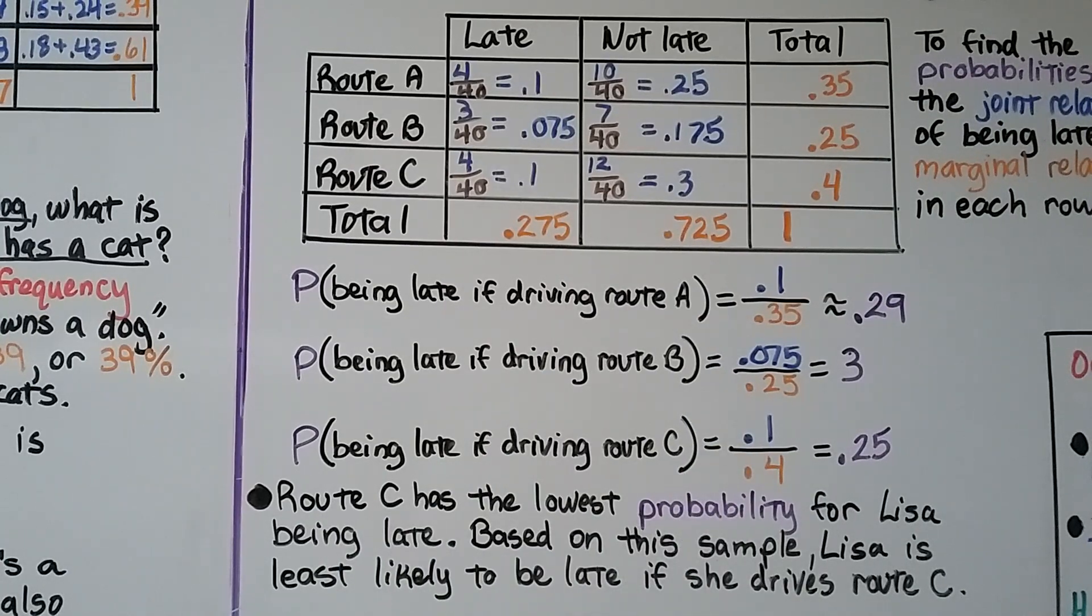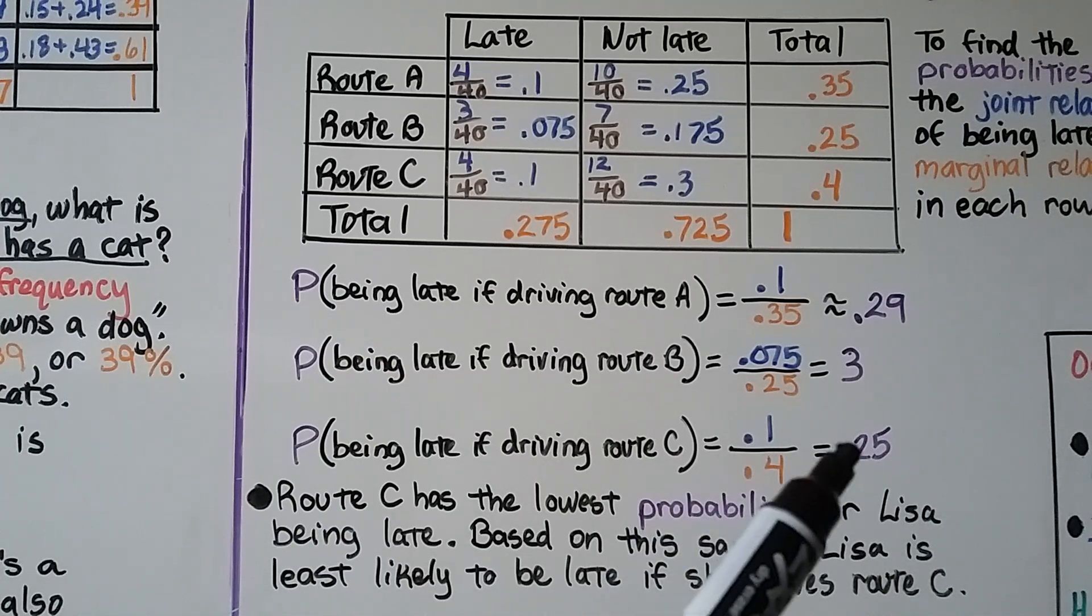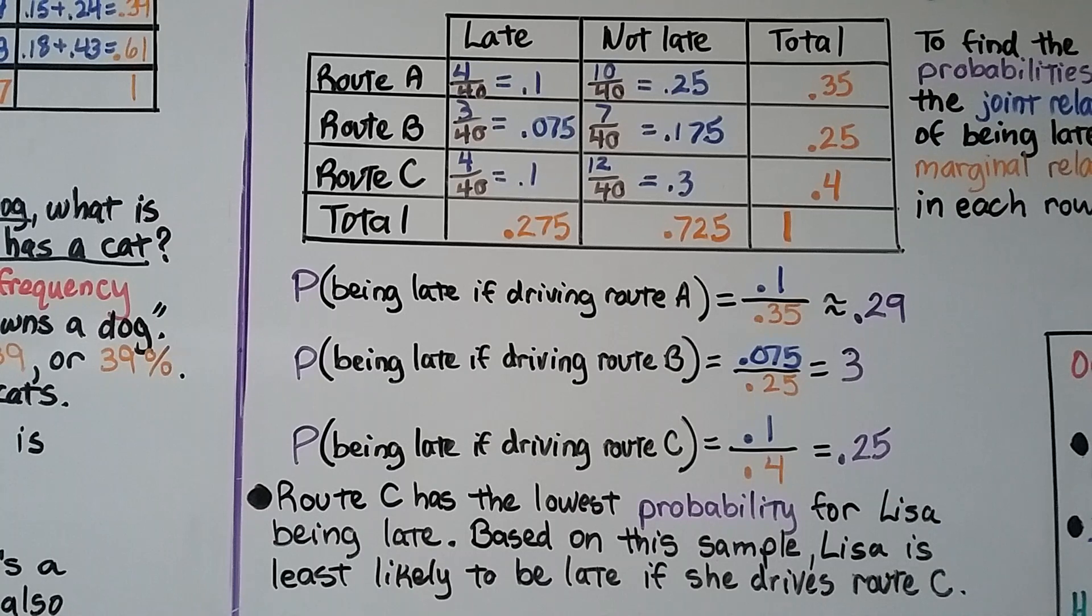So route C has the lowest probability for Lisa being late. It's the smallest one. And based on this sample, Lisa's least likely to be late if she drives route C. So we found the conditional probabilities by dividing the joint relative frequency of being late by the marginal relative frequency in each row.